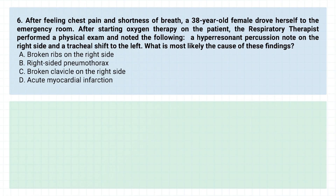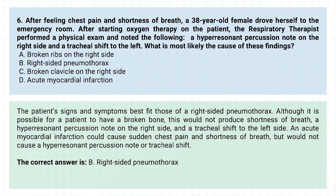Question number six. After feeling chest pain and shortness of breath, a 38-year-old female drove herself to the emergency room. After starting oxygen therapy on the patient, the respiratory therapist performed a physical exam and noted the following: a hyper-resonant percussion note on the right side and a tracheal shift to the left. What is most likely the cause of these findings? A. Broken ribs on the right side. B. Right-sided pneumothorax. C. Broken clavicle on the right side. D. Acute myocardial infarction. The correct answer is B. Right-sided pneumothorax.